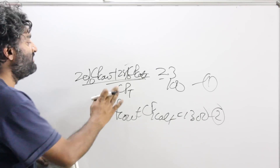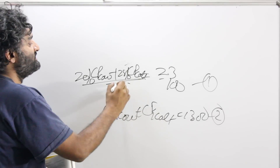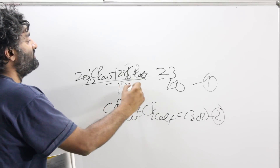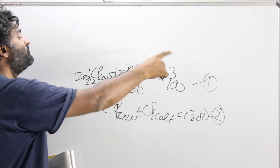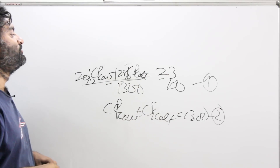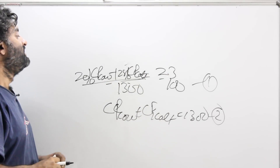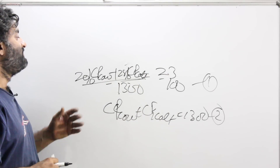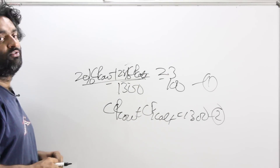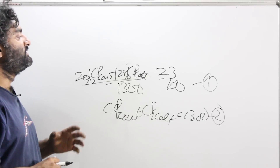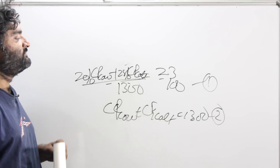We also have the equation that cost price of the cow plus cost price of the calf is 1300. Using these two equations together, you can figure out the values of CP1 and CP2 — the cost of the cow and the cost of the calf.